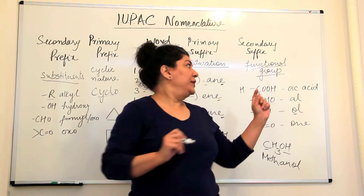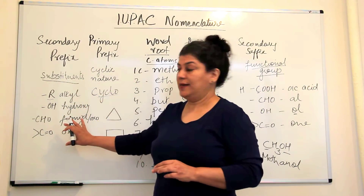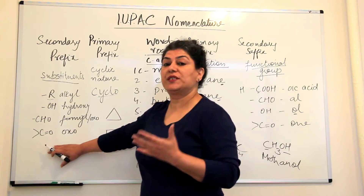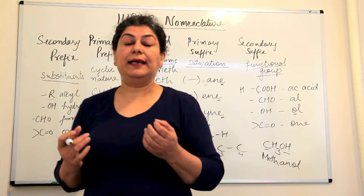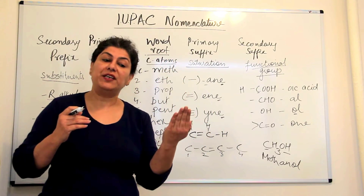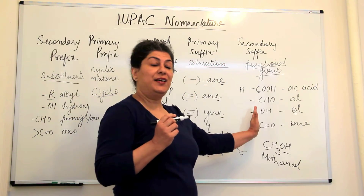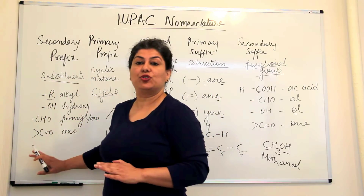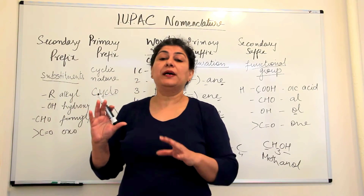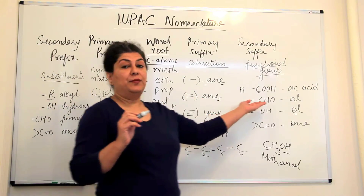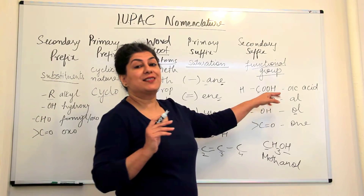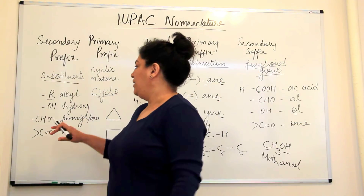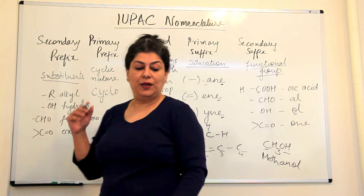Other than alkyl groups, some functional groups are also treated as substituents. For example, -NO2 (nitro) is always written as a substituent even though it is a functional group. If a compound has more than one functional group, one will have greater preference — that one becomes the secondary suffix, while the less important one is treated as a substituent and used as a prefix. Note that when a functional group is used as a prefix, its name differs from its suffix form — for example, -OH as a suffix is '-ol,' but as a prefix it is 'hydroxy.'